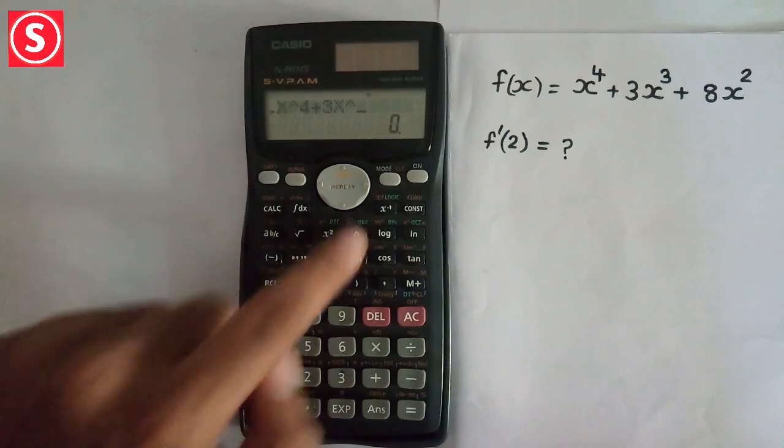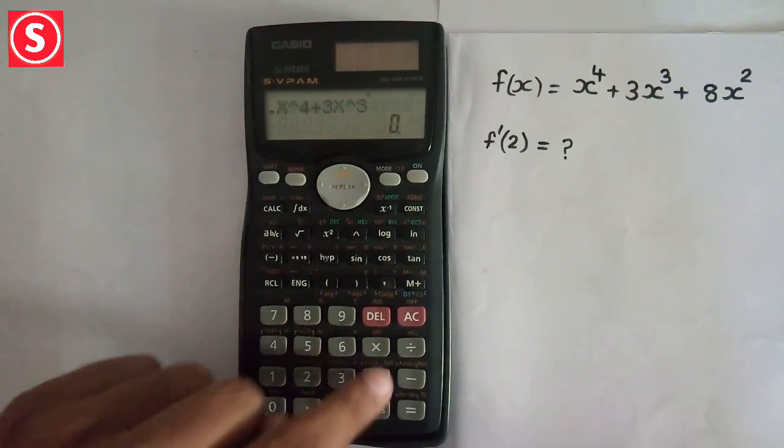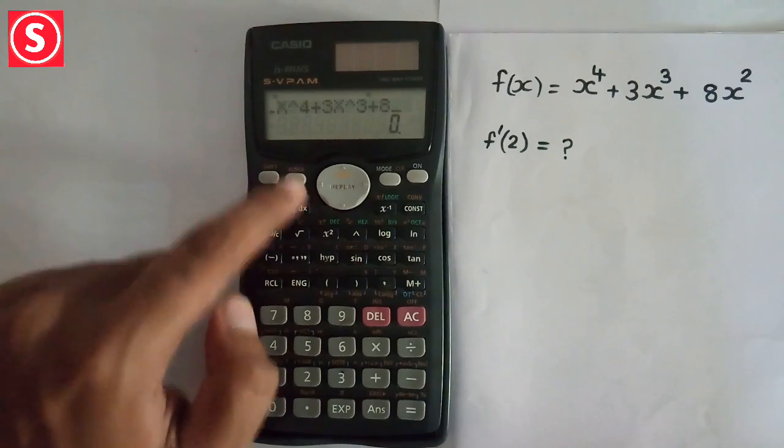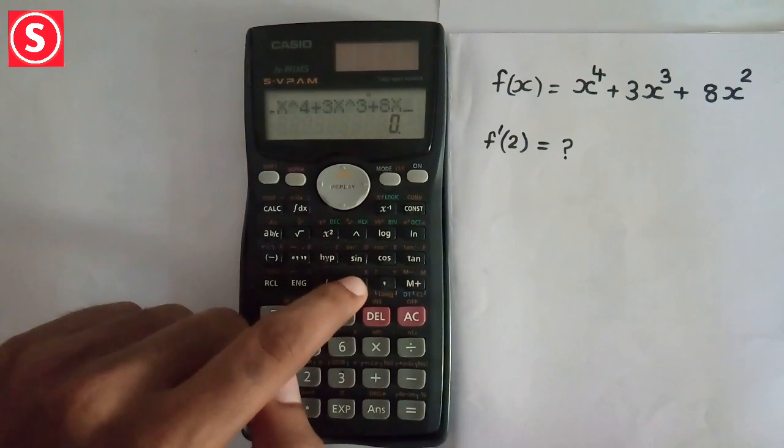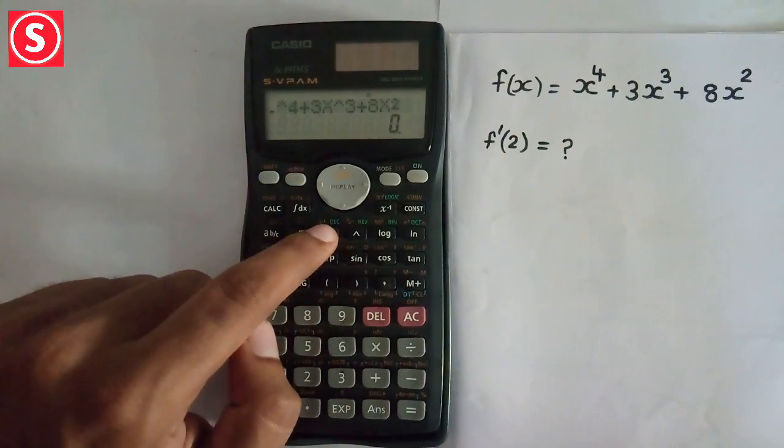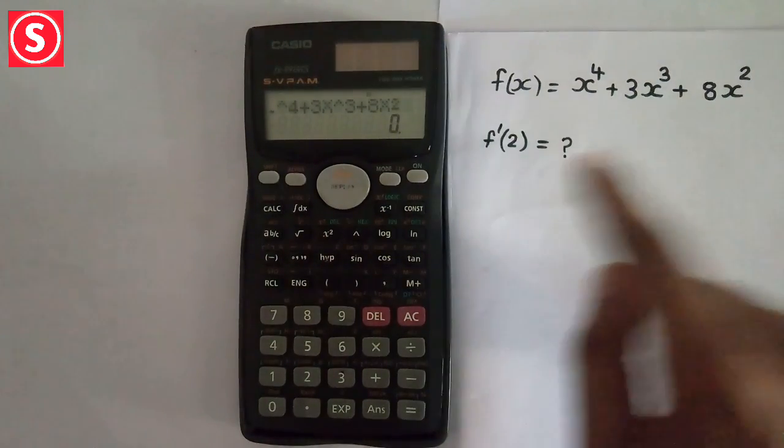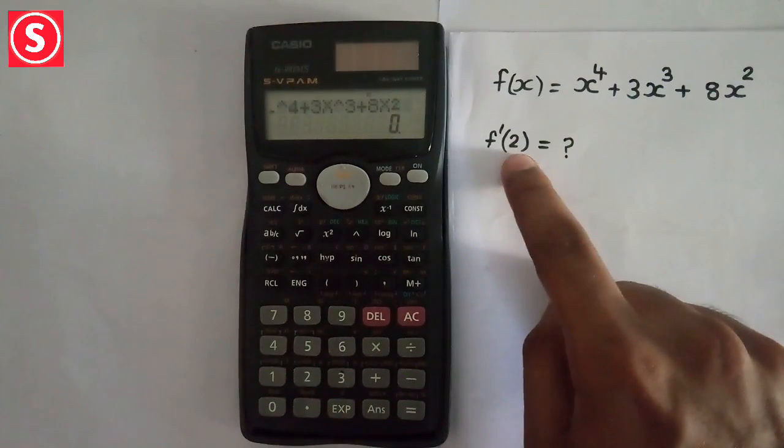X square. Now don't close the bracket. Instead of closing the bracket, we need to find the derivative at point 2.